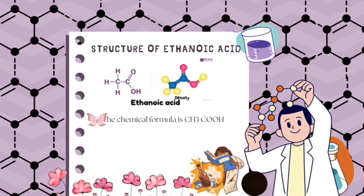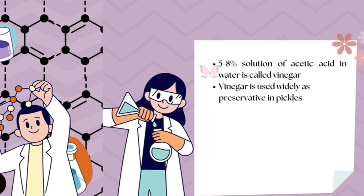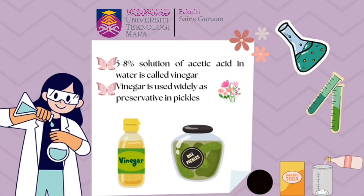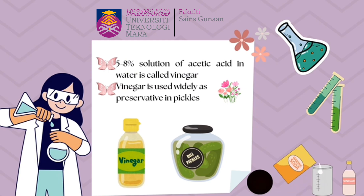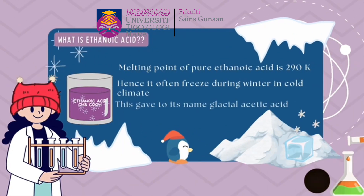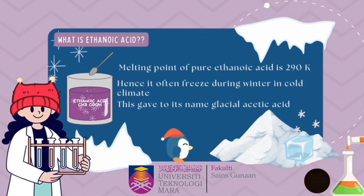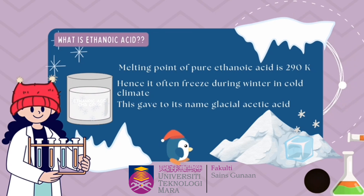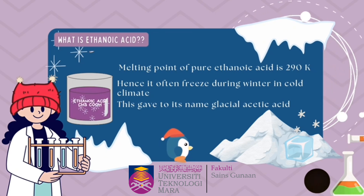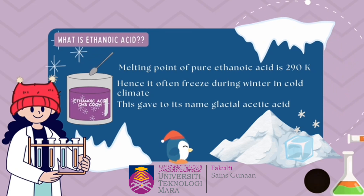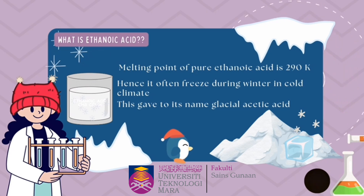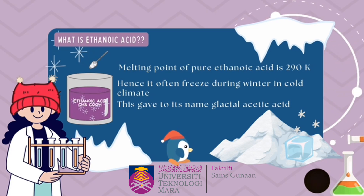This is the structure of ethanoic acid. The chemical formula is CH3COOH. After adding 5-8% of acetic acid in water, it becomes vinegar, and it is mostly used as a condiment in cooking. The melting point of pure ethanoic acid is 290 Kelvin or 16 degrees Celsius. Hence, it is often frozen in winter when the climate is cold. This gave rise to its name glacial acetic acid.